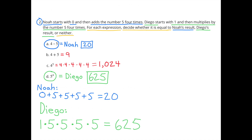D: 5 to the 4th power matches Diego, because Diego starts with 1 and then multiplies by the number 5 four times. And 1 times 5 times 5 times 5 times 5 equals 625.